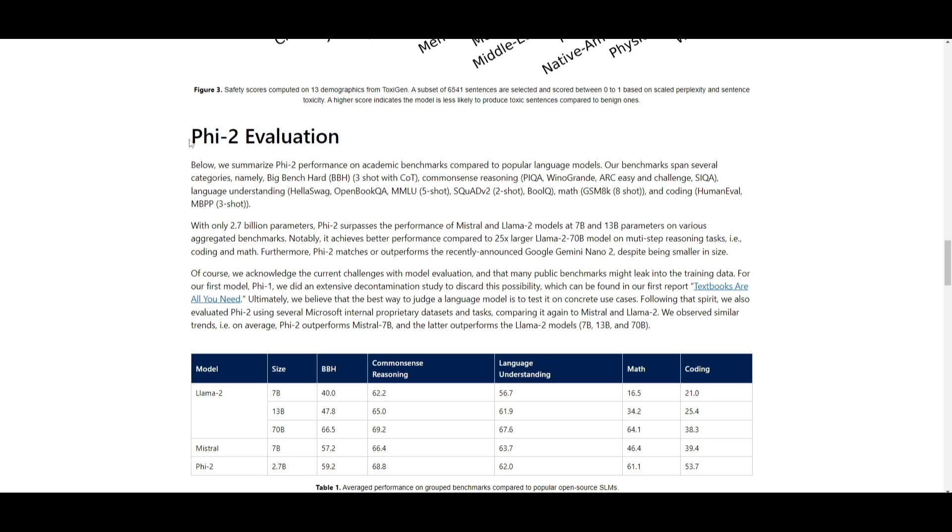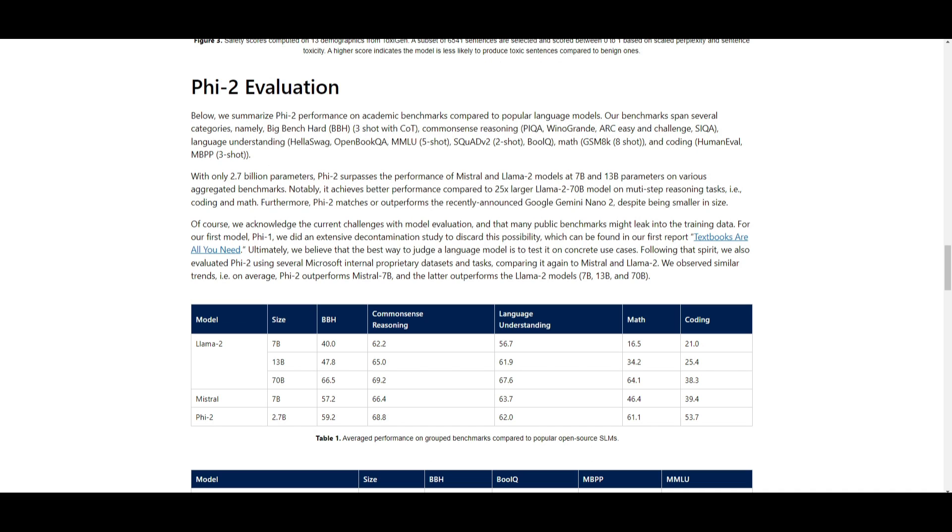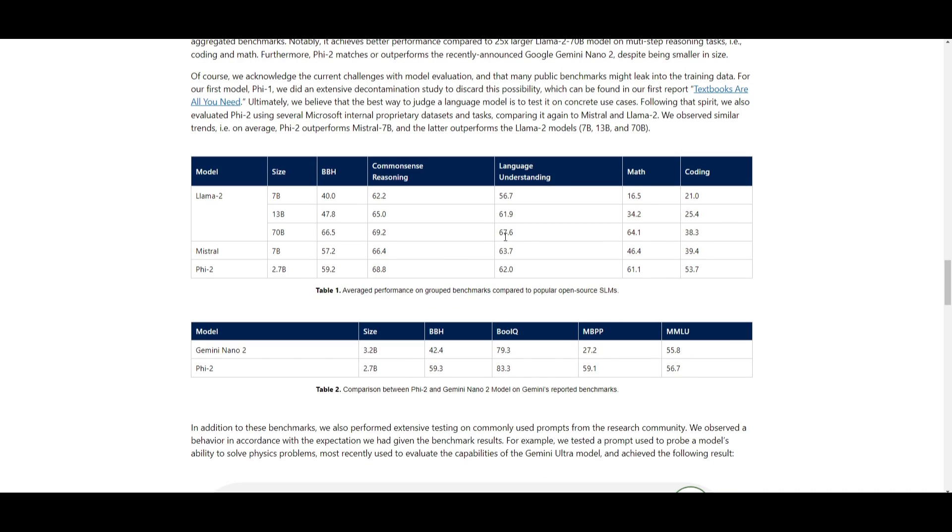Now comes the juicy part where we take a look at the evaluation. Performance was evaluated across different benchmarks, including tasks related to reasoning, understanding, mathematics, and coding. Despite only having 2.7 billion parameters, it's able to compare and outperform larger models like Mistral and Llama 2, which have 7 billion and 13 billion parameters respectively on various benchmarks. This Phi-2 model excels in comparison to other models such as Llama 2's 70 billion base model, 20 times even better. It also matched or outperformed Google's Gemini Nano 2 model with such a smaller size.